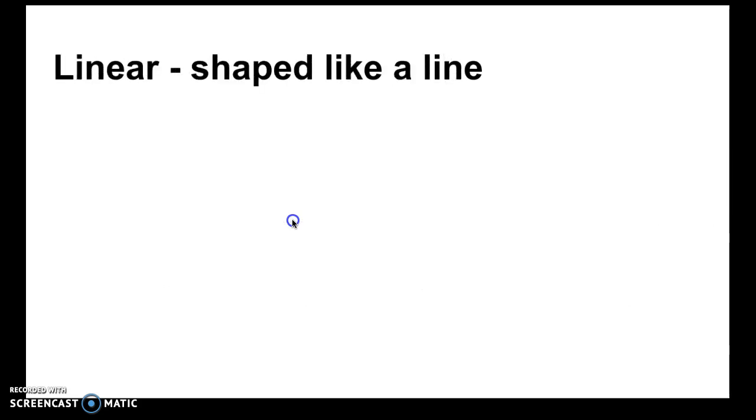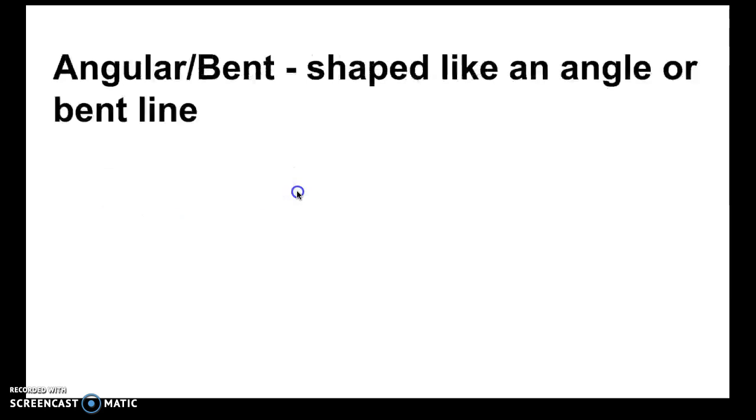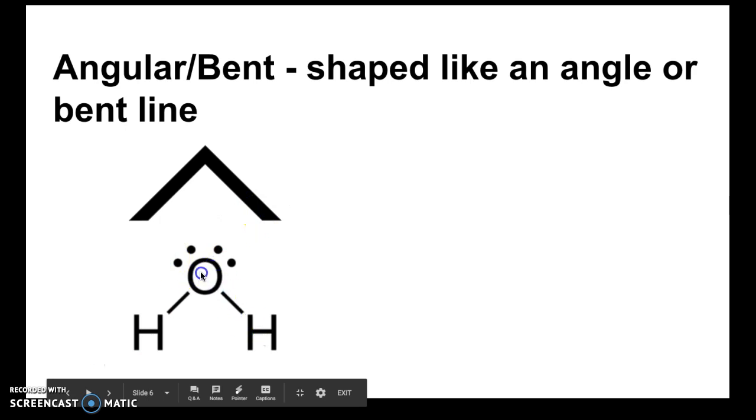Starting with linear. So you can see in the word linear the word line. So linear is something that's shaped like a line. An example of a molecule like that is HCN, and you can clearly see that this looks like a line. Angular or bent is something that's shaped like an angle or a bent line. An example of a molecule that would sort of match that would be water. So you can clearly see when water is drawn in this VSEPR form, you can see that it looks like a bent line if you trace the molecule.